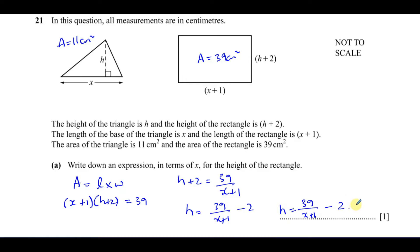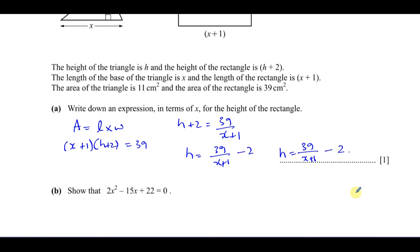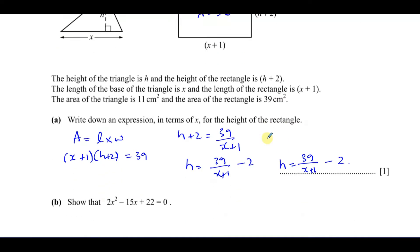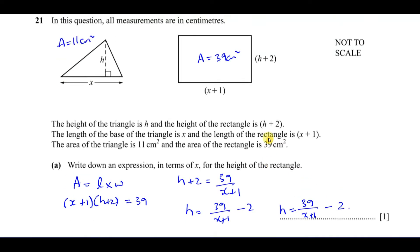Part (b) says show that 2x² minus 15x plus 22 equals zero. We can use the expression h equals 39 over (x plus 1) minus 2 and substitute it into the triangle equation, since the h in both shapes is the same. We replace h in the triangle area formula with 39 over (x plus 1) minus 2.